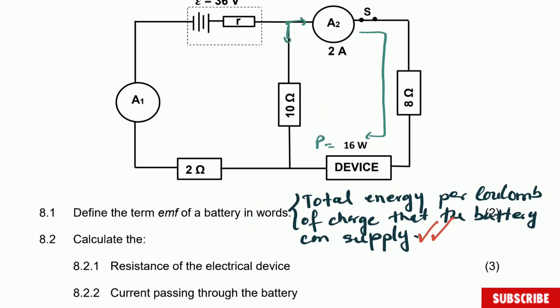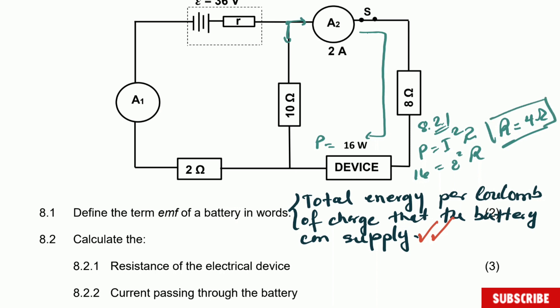Question 8.2.1: the formula is power equals current squared multiplied by R. Substituting: 16 = 2² × R, so R = 4 ohm. It's a very simple calculation. One mark for the formula, one for the substitution, and one for the final answer — three marks total.